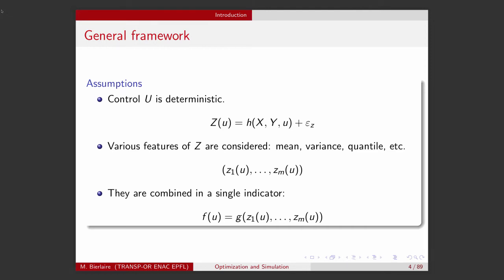To do that, we will make some simplifications. We will assume that U is deterministic, so that the variable U that we control is deterministic. The convention we have used is that capital letters represent random variables. U written in lower case means that it's considered as a deterministic variable.